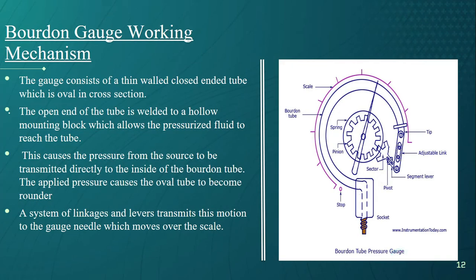In this slide we will see how a Bourdon tube pressure gauge works. The open end of the tube is welded to a hollow mounting block which allows the pressurized fluid to reach the tube. This causes the pressure from the source to be transmitted directly to the inside of the Bourdon tube. The applied pressure causes the oval tube to become rounder since a round cross section has the maximum area for a given circumference. As it becomes rounder, the Bourdon tube tends to uncurl which causes its free end to move.